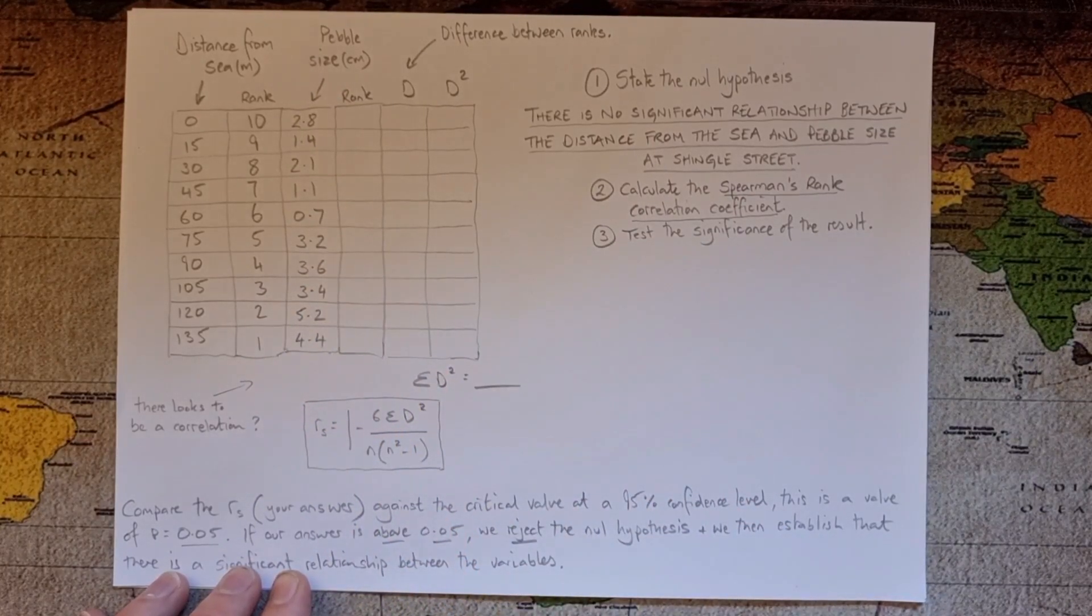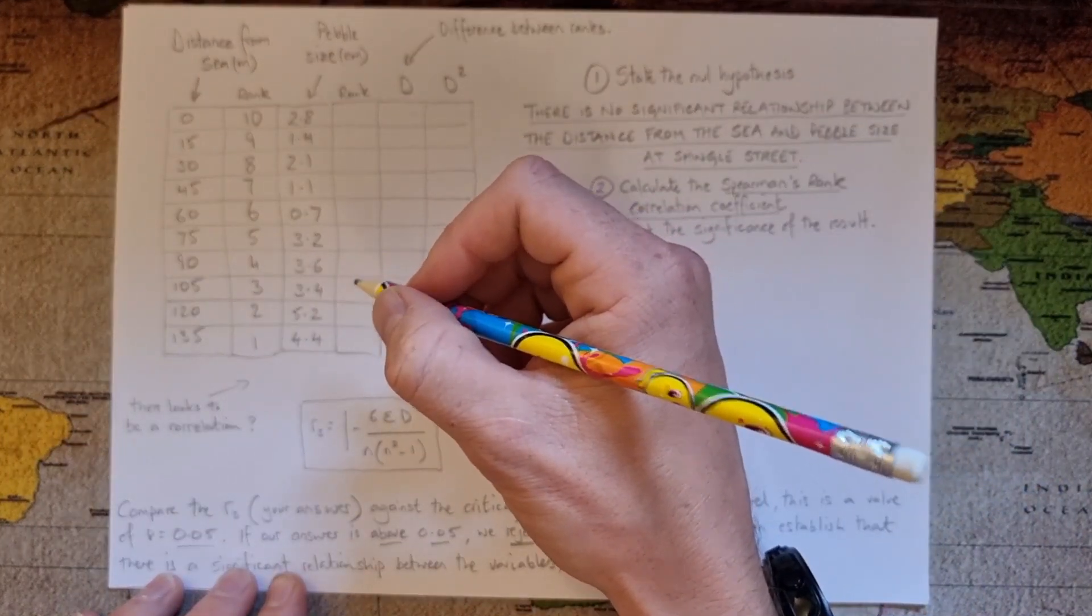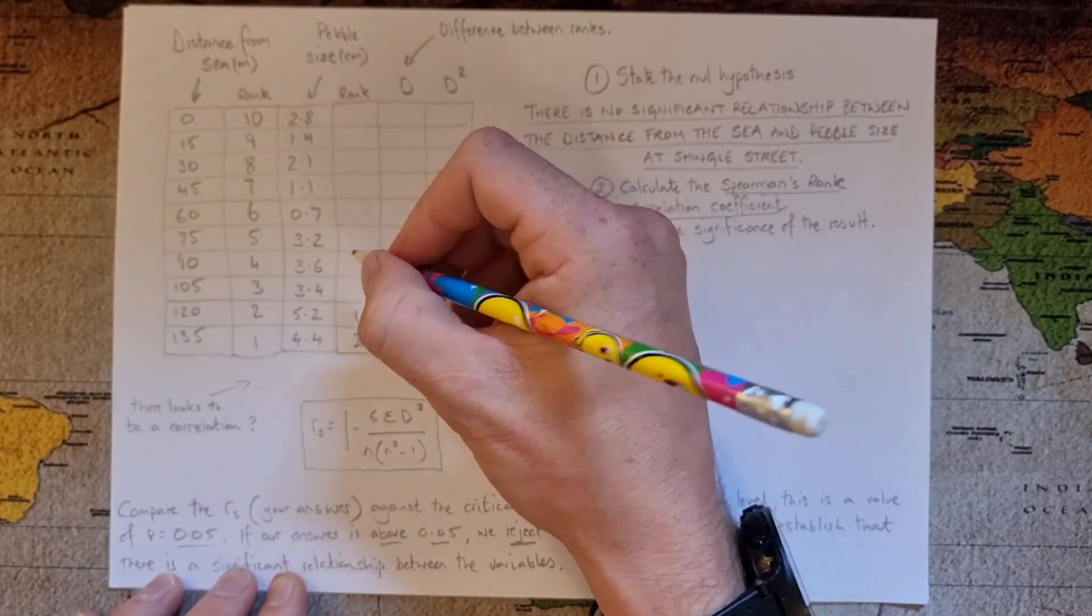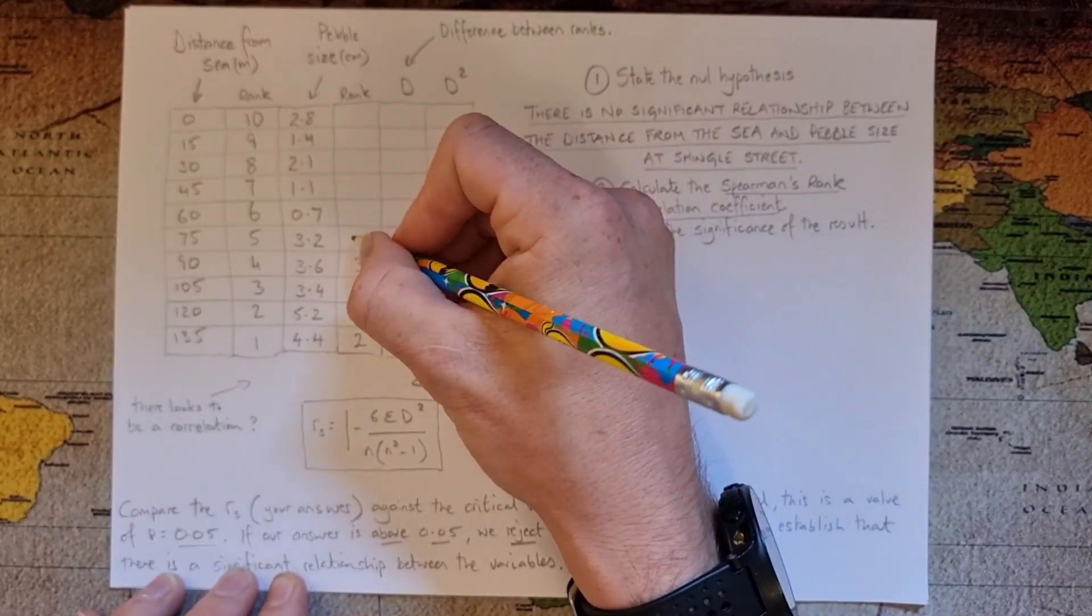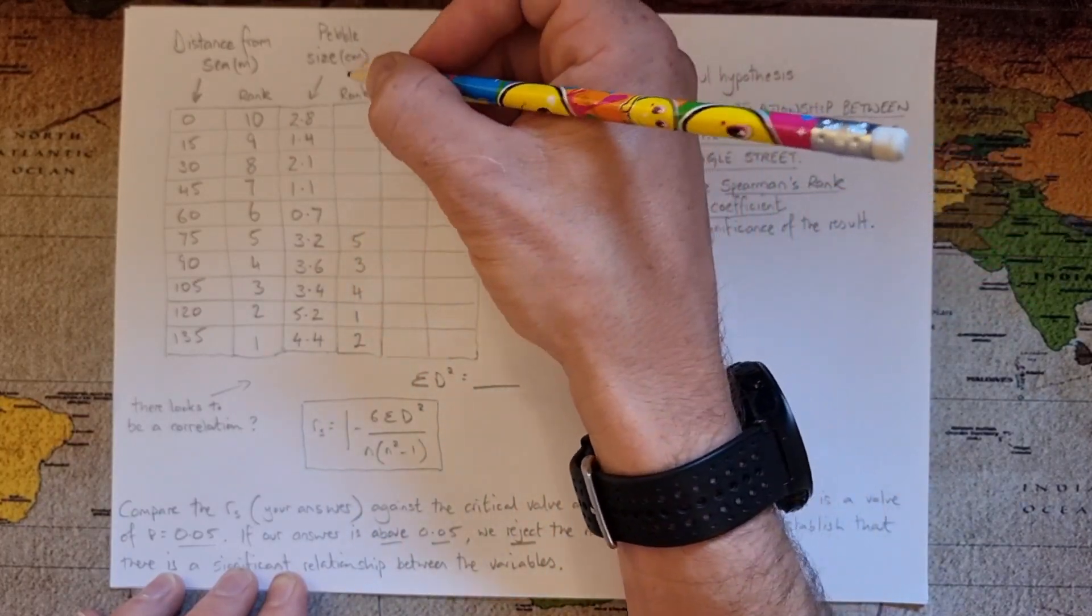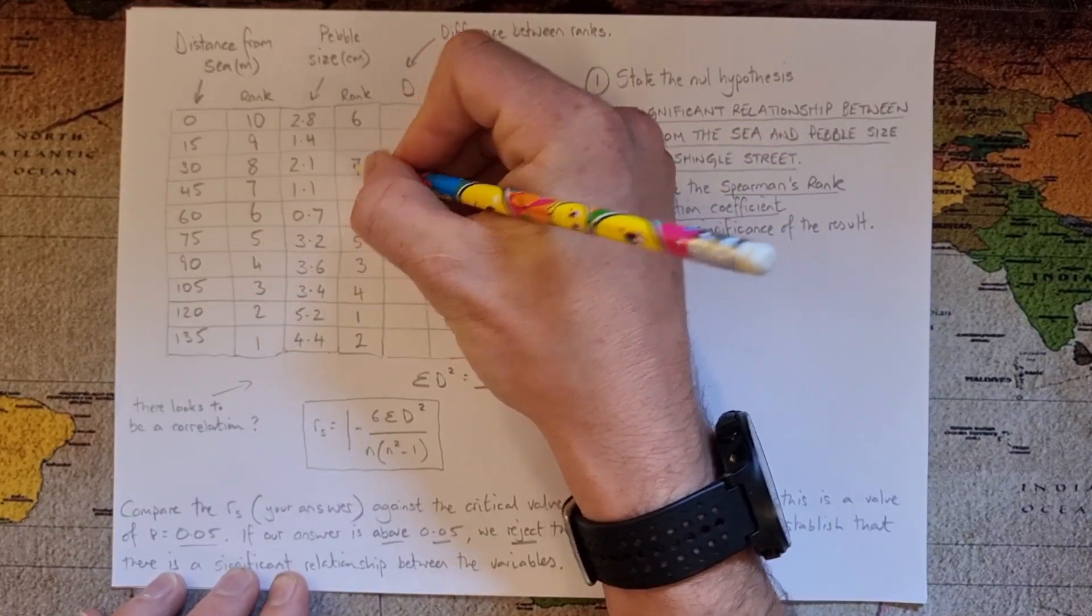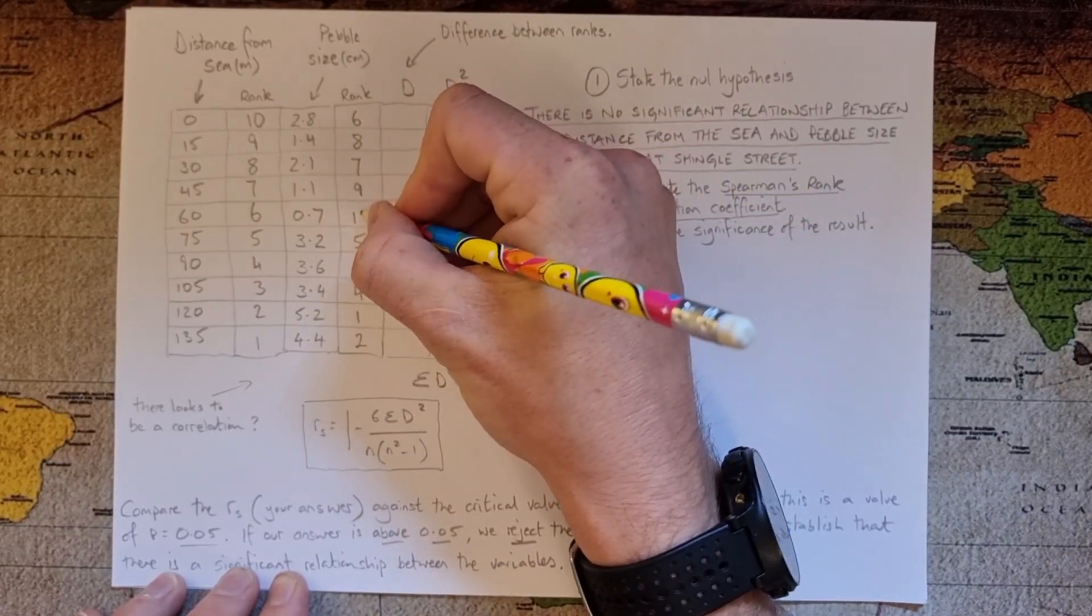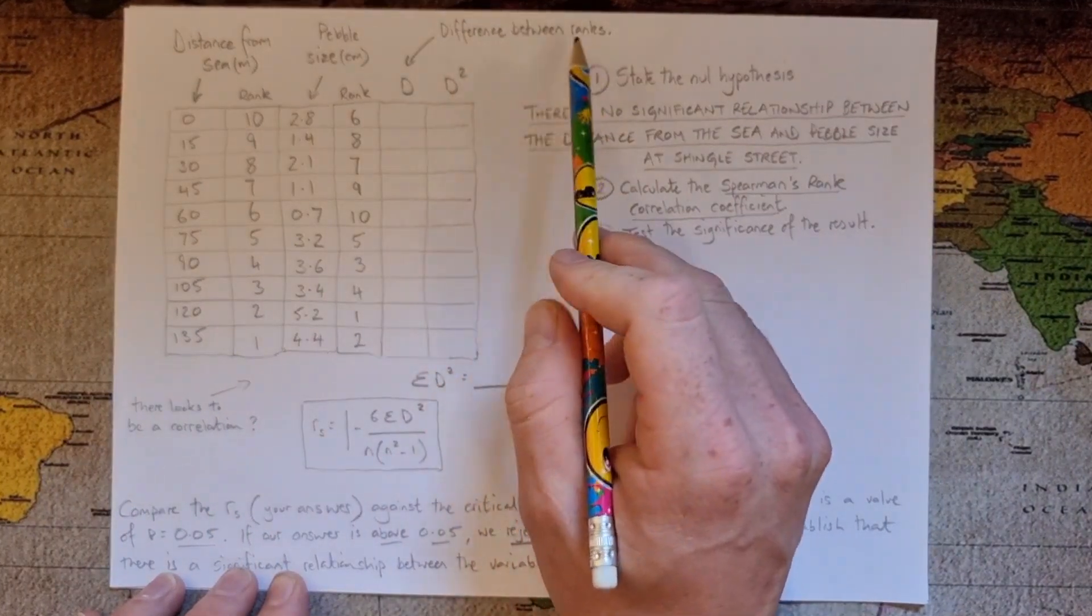And then I need to rank the pebble size in this column here. So slightly more complex but nothing too complicated hopefully. So we go, okay, biggest number is down the bottom so that's number 1 there. Second biggest would be 4.4. Third biggest is there. Fourth biggest, number 1 there. Then we've got to go down to 3.2. Then I've got to go all the way up to the top for number 6. 7th, 8th and then 9th, and rank 10.